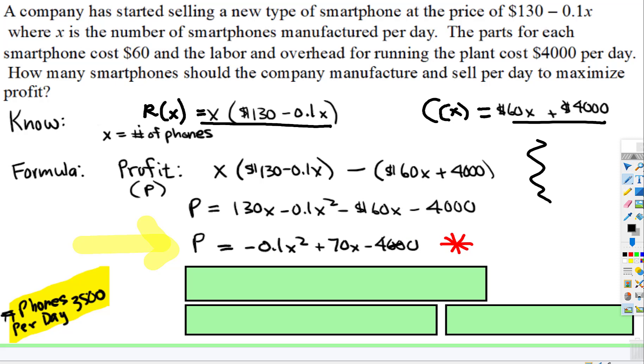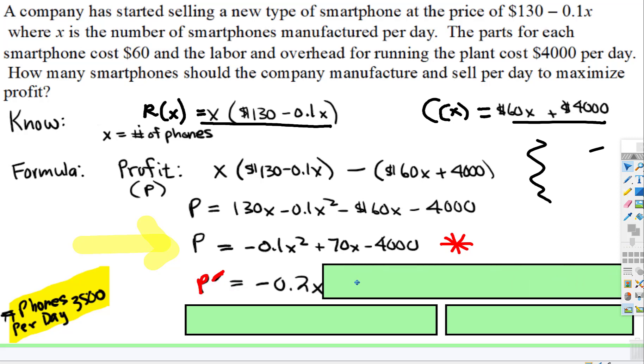So now we take the derivative of the profit function. So there we go, that's negative 0.2X plus 70. Plus 70, hopefully I didn't make the error down here.